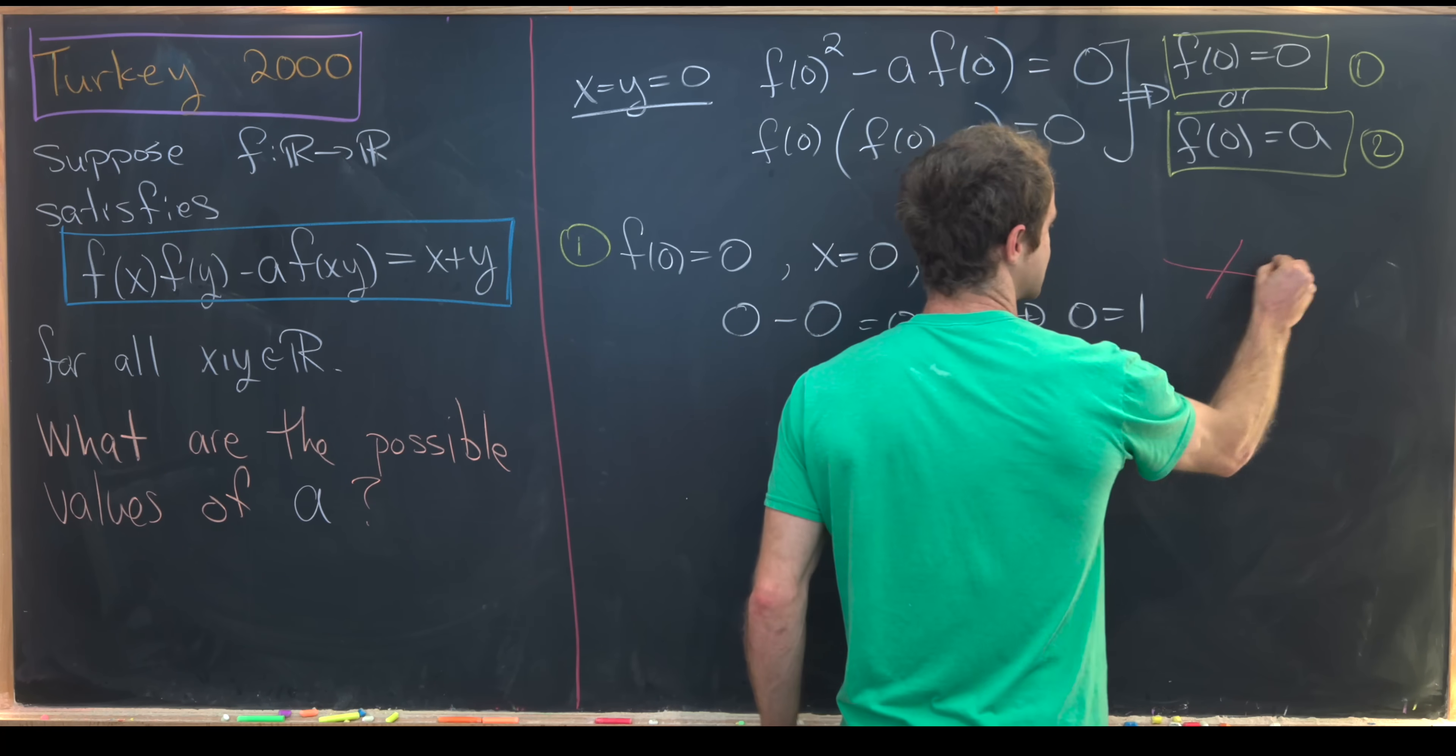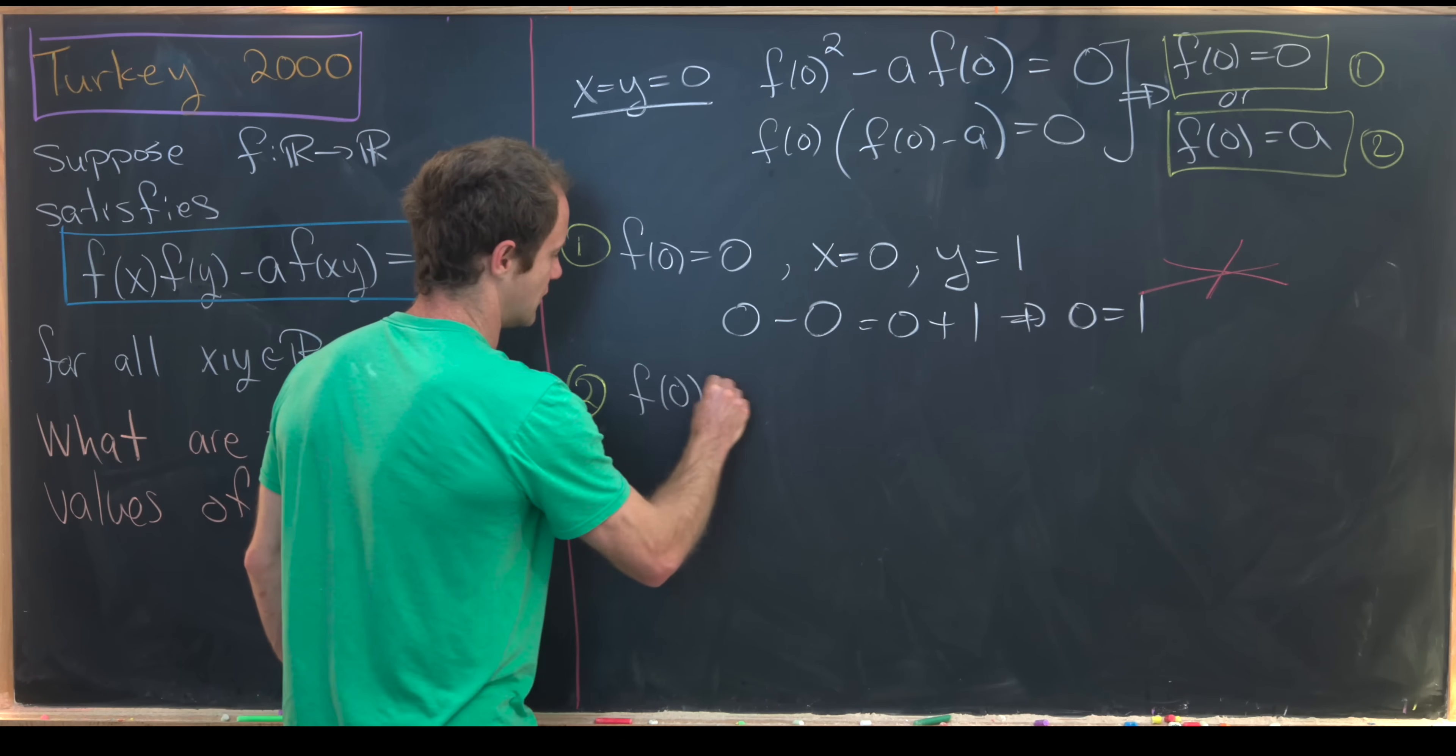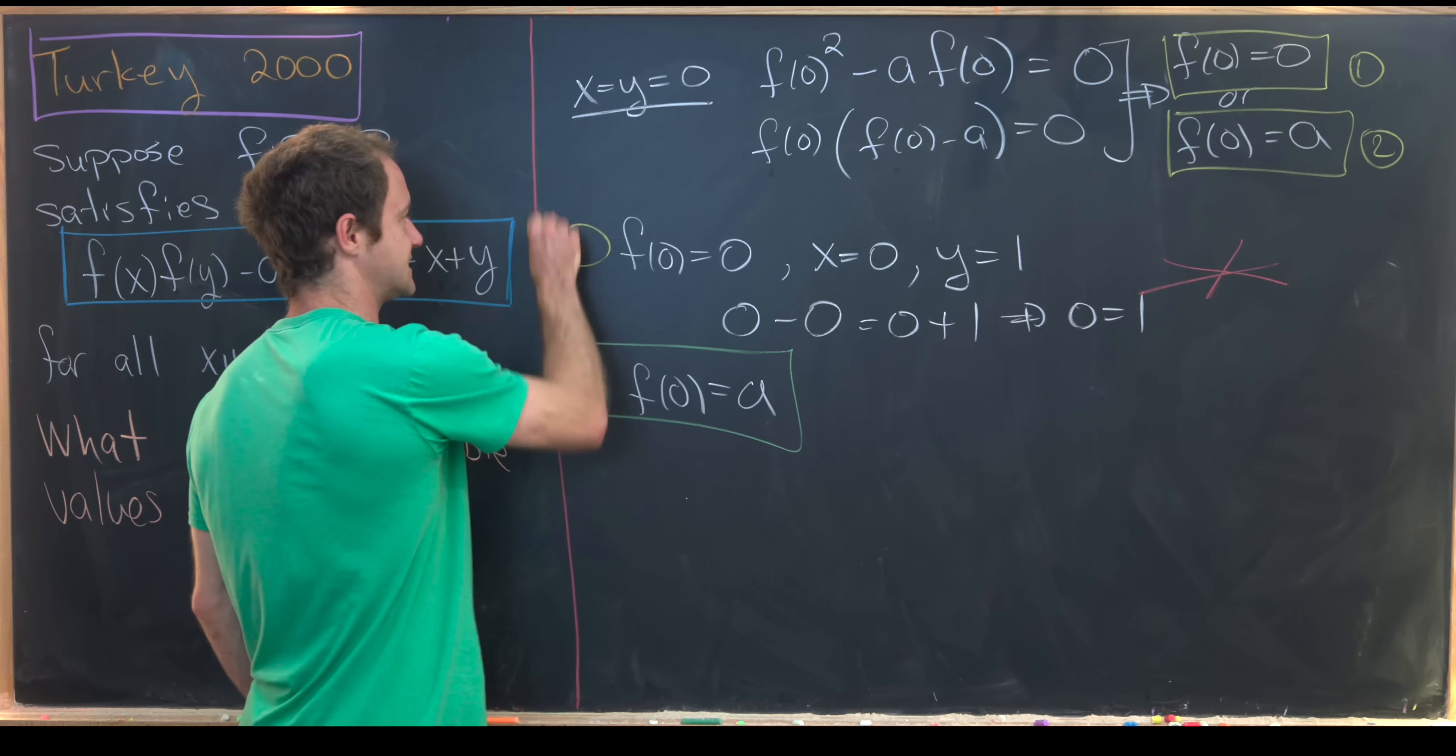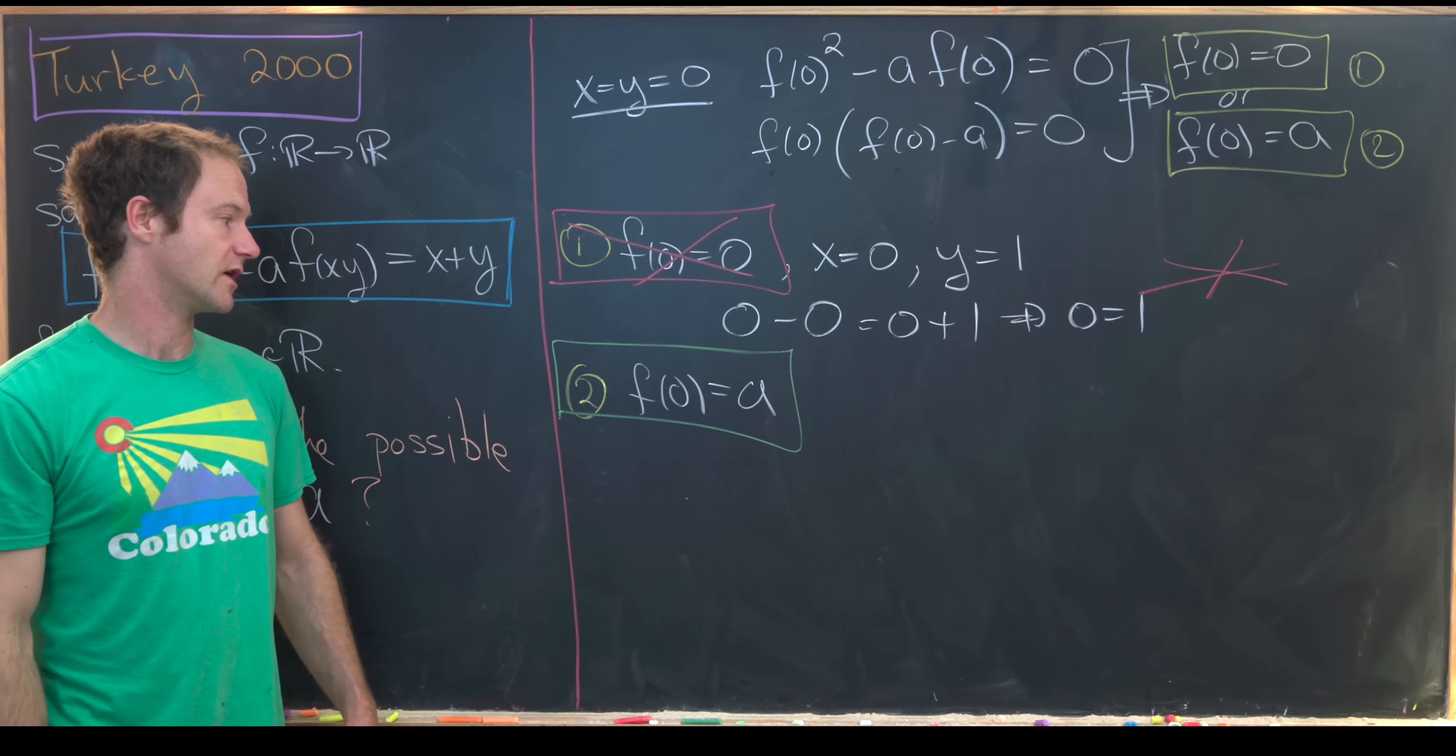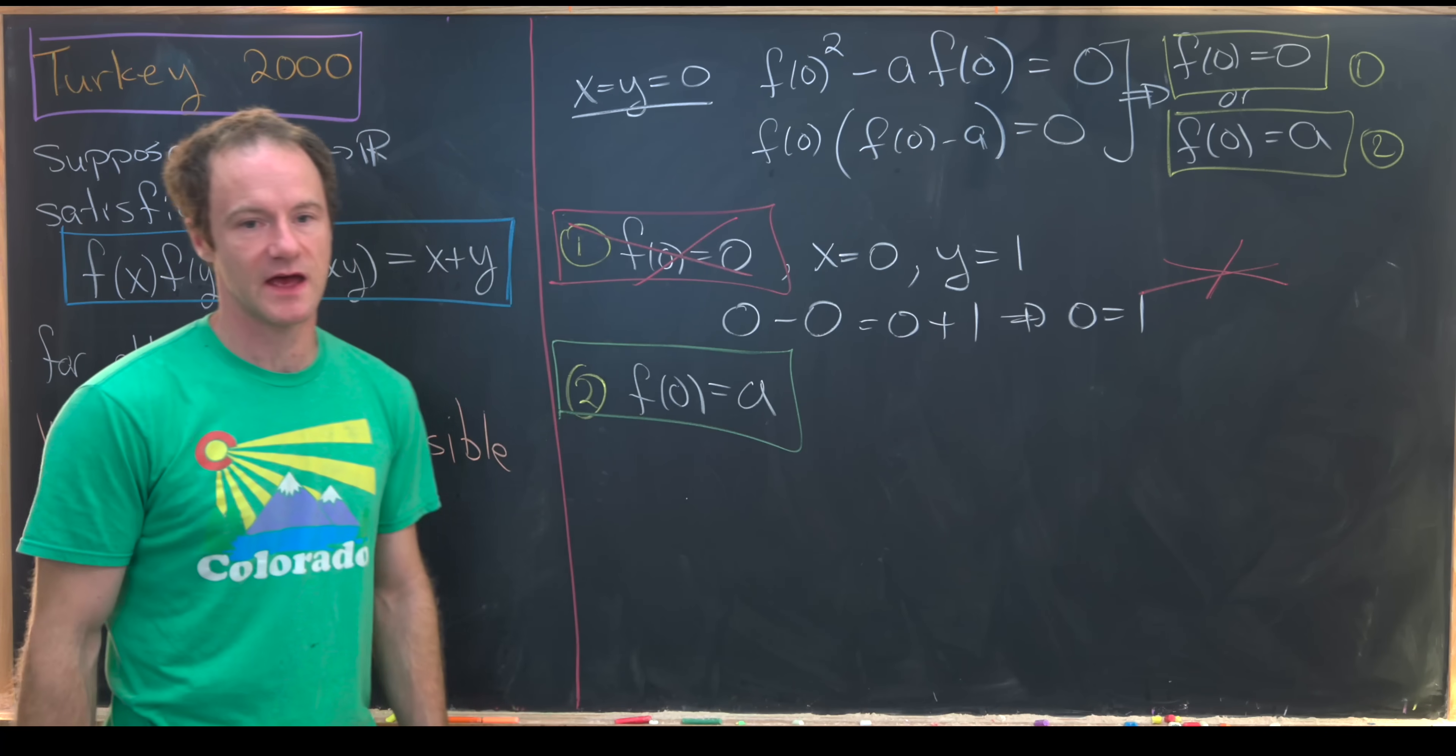But notice that implies that zero is equal to one, which is clearly impossible. So we come up with a contradiction over there, and that means we should move on to the second case, which is when f(0) equals a. So this case when f(0) equals zero is impossible. The case when f(0) equals a is what we need to move on with. And now immediately from this case, we see that a cannot be equal to zero.